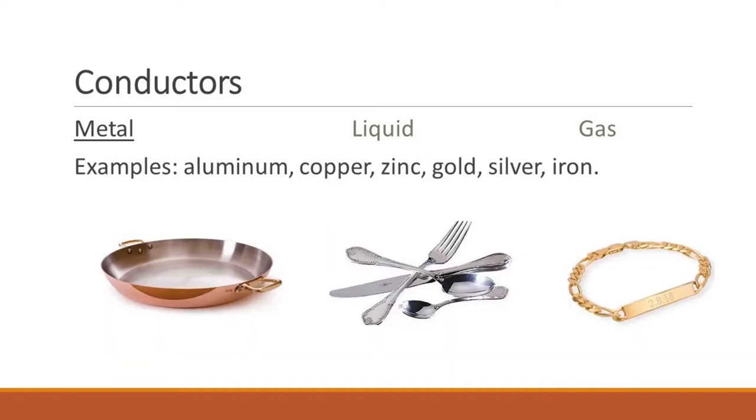Examples of conductors found as metal are aluminum, copper, zinc, gold, silver, and iron. We find them in utensils we use to cook food and utensils we use to eat food, just like forks, knives, spoons, and we might find them in bracelets and necklaces as well.